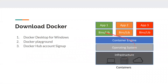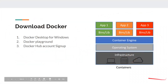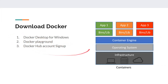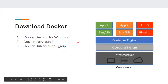Before proceeding — in the previous session we downloaded Docker. We have a physical infrastructure with our laptops: I have Windows, you may have Mac or Linux. We also need a Docker container engine — in our case, Docker. We also understood that if you don't want to download Docker, you can use Docker Playground. And we saw how to sign up for Docker Hub. Now all these three things are ready.